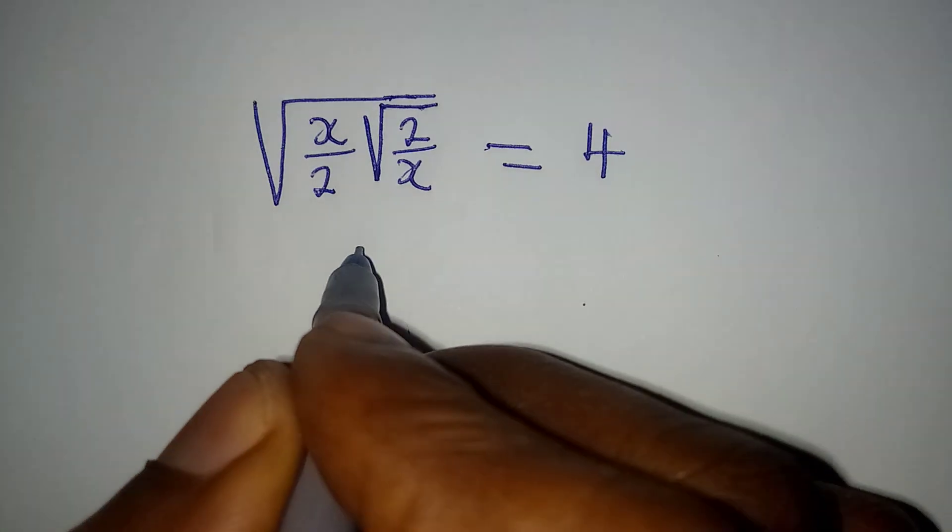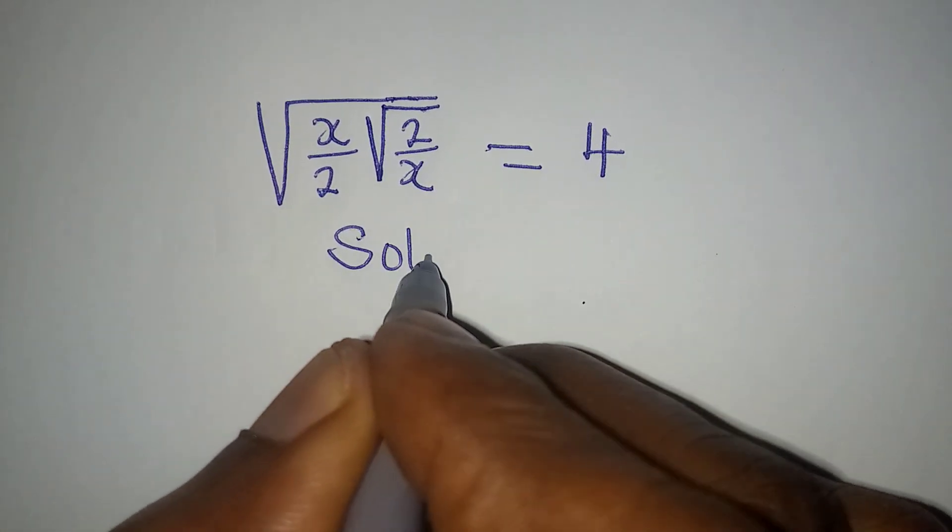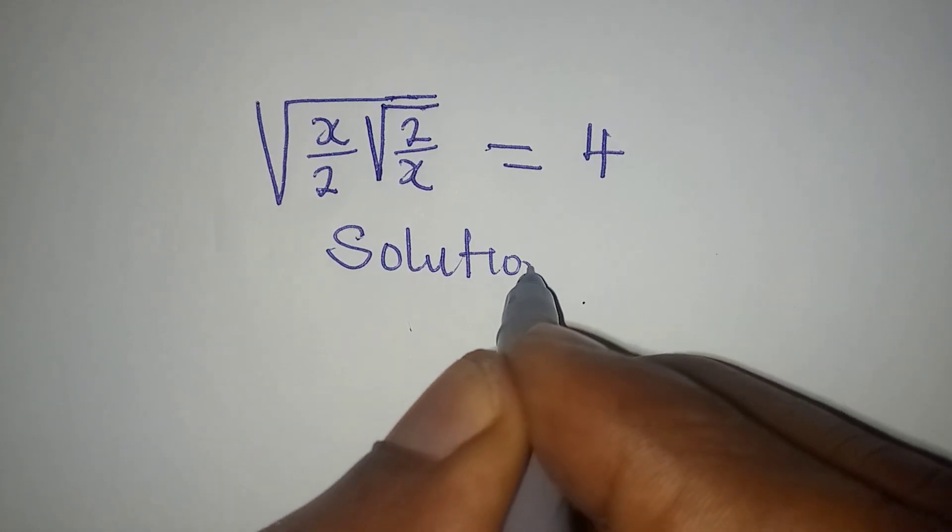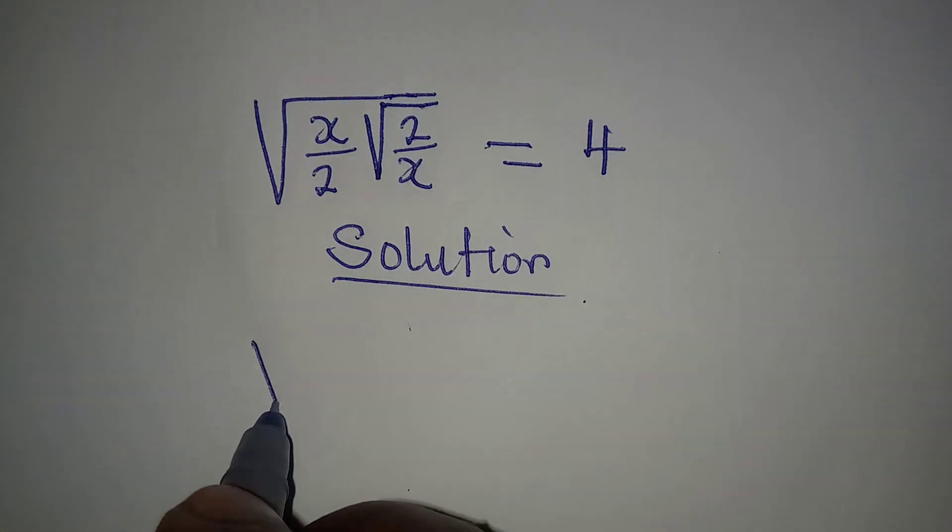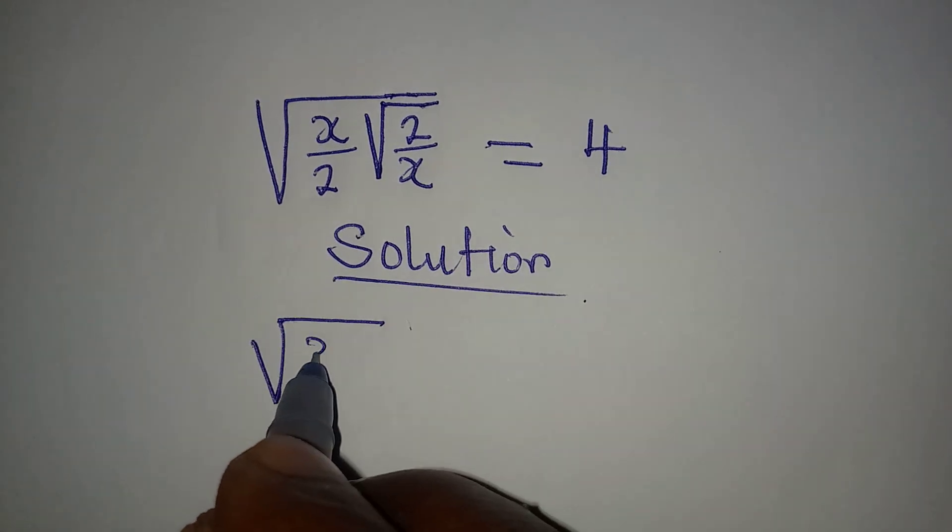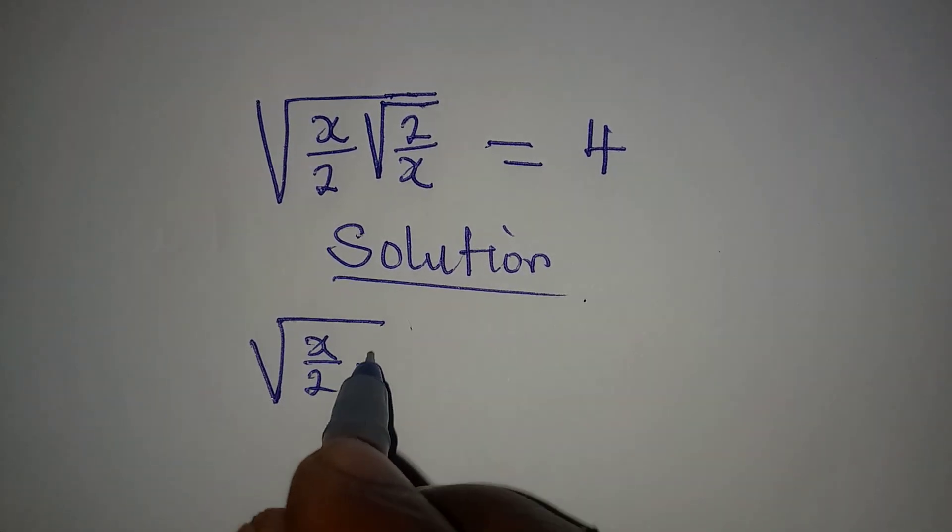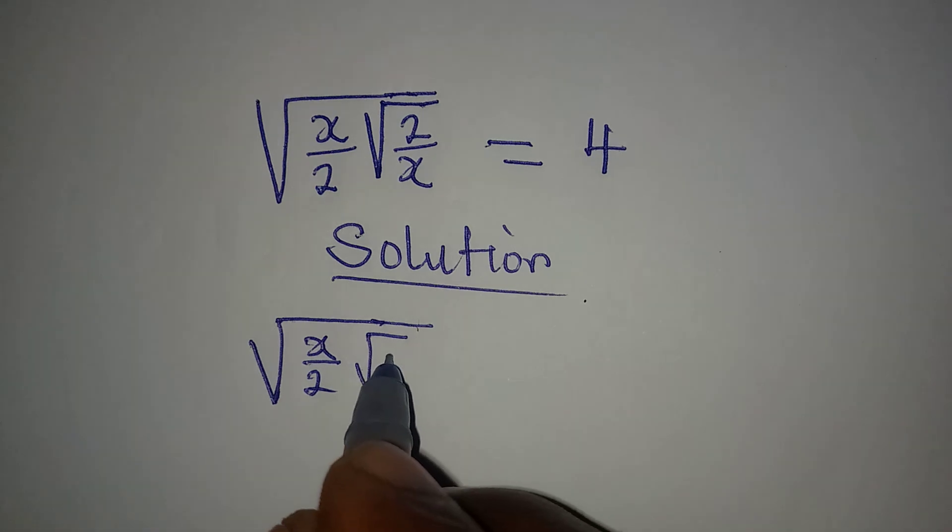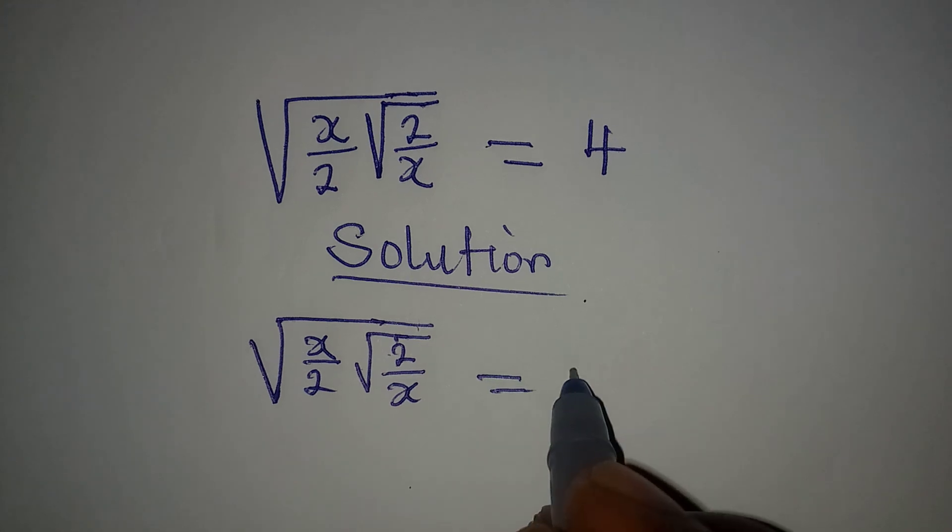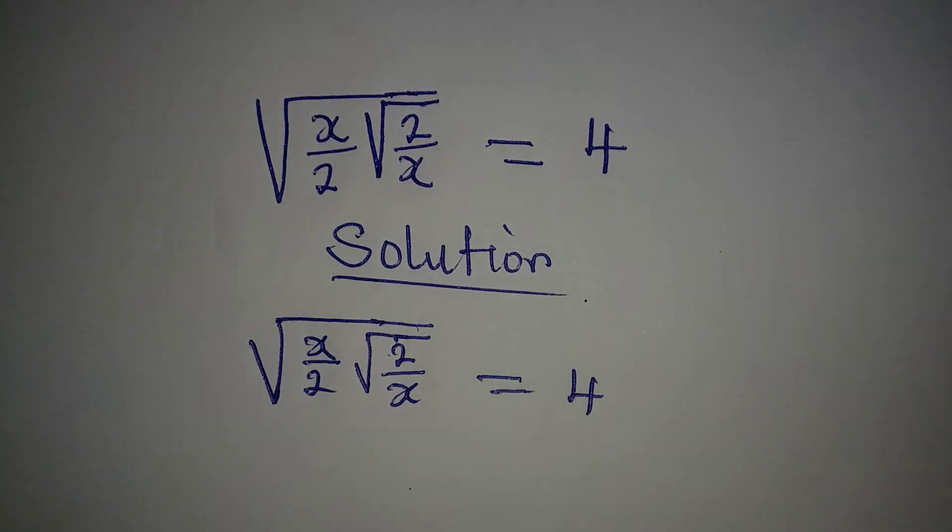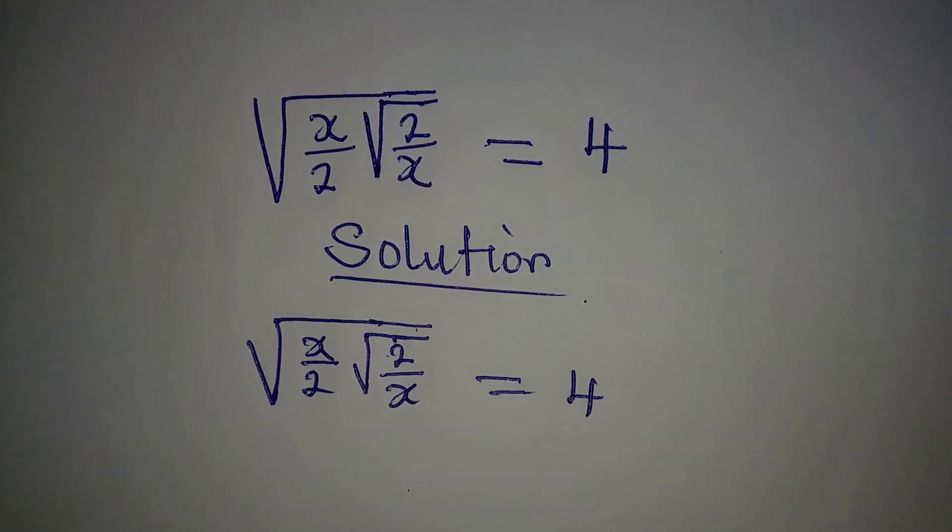Hello everyone, let's provide a solution to this problem. We have square root of x over 2 times square root of 2 over x equals 4. Now what if this cancels that? But that would be wrong, okay.